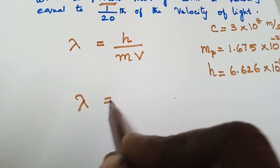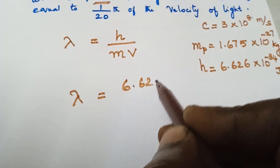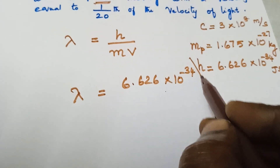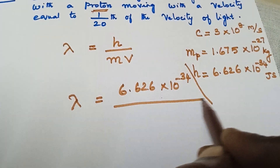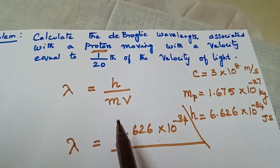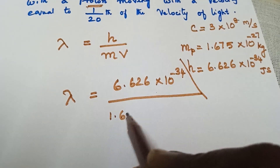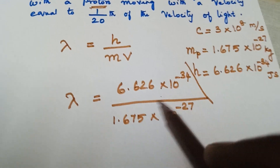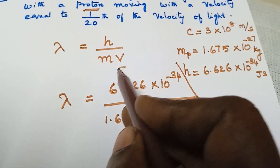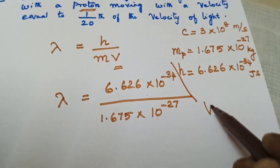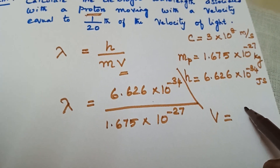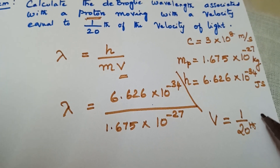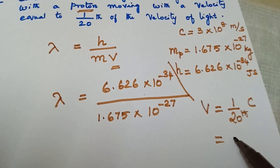Lambda is equal to 6.626 × 10⁻³⁴ in the numerator, divided by the mass of the proton 1.675 × 10⁻²⁷, and V is taken as 1/20th of the velocity of light, that is, C/20.